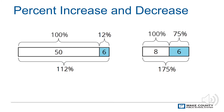The computer club has eight students. Then they gain six students. This is a 75% increase because six divided by eight is 0.75. They now have 14 students, which is 175% of the starting amount. 1.75 times eight equals 14.